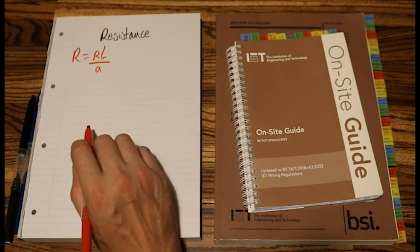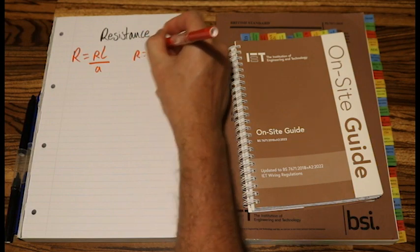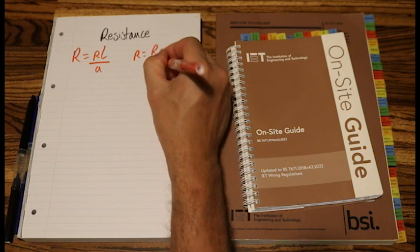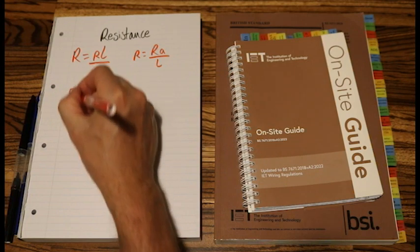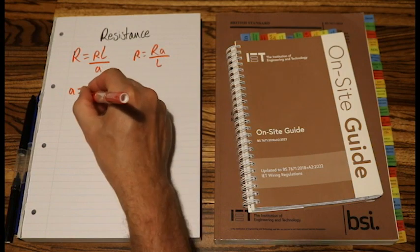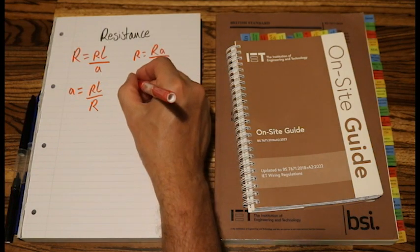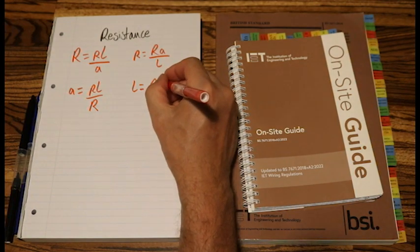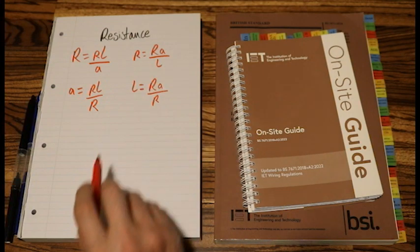Now let's transpose that formula for everyone. So we've got Rho equals capital R times a over L. And then we'll have a lowercase a equals Rho L over capital R. And finally, L equals capital R times a over Rho.